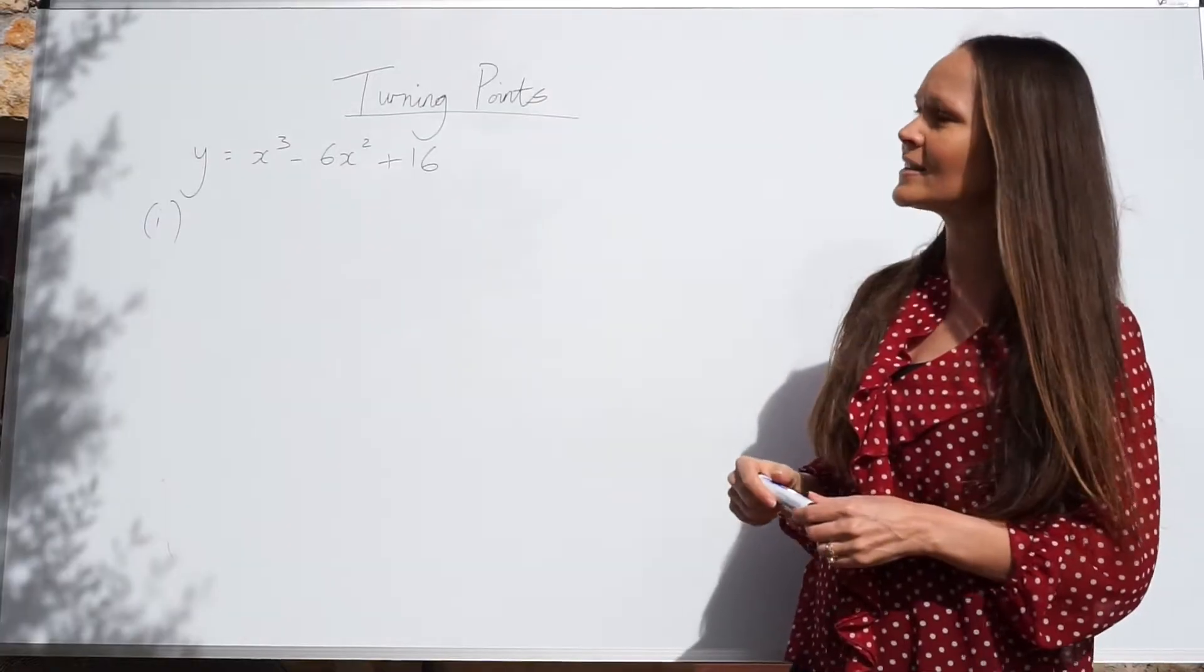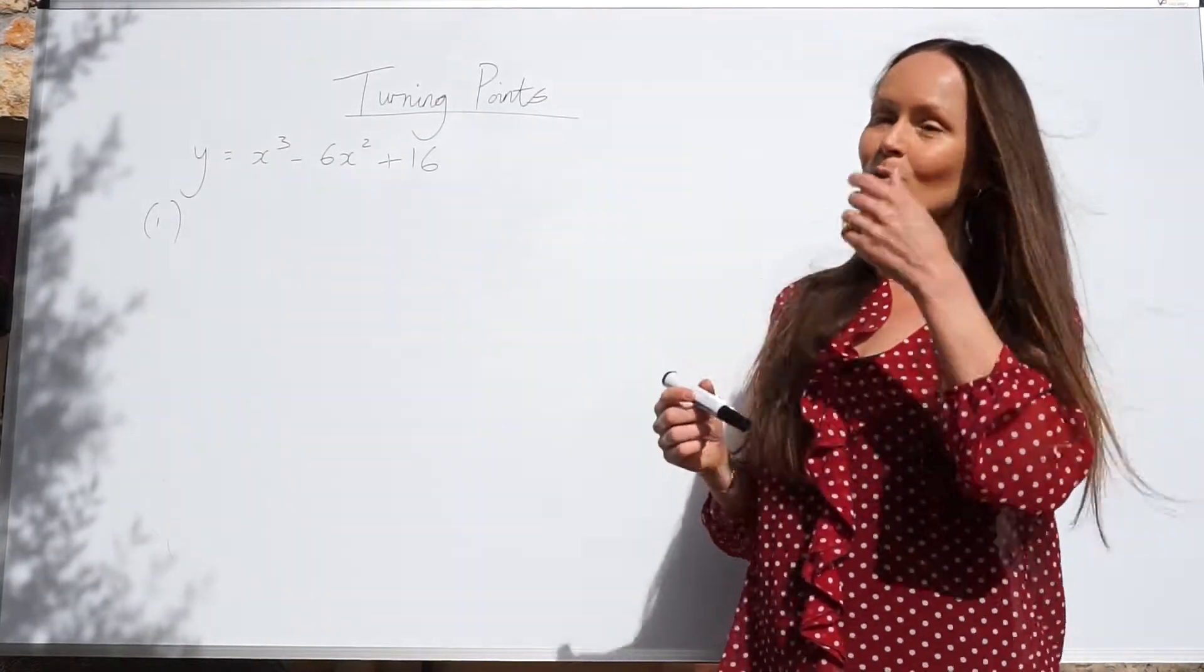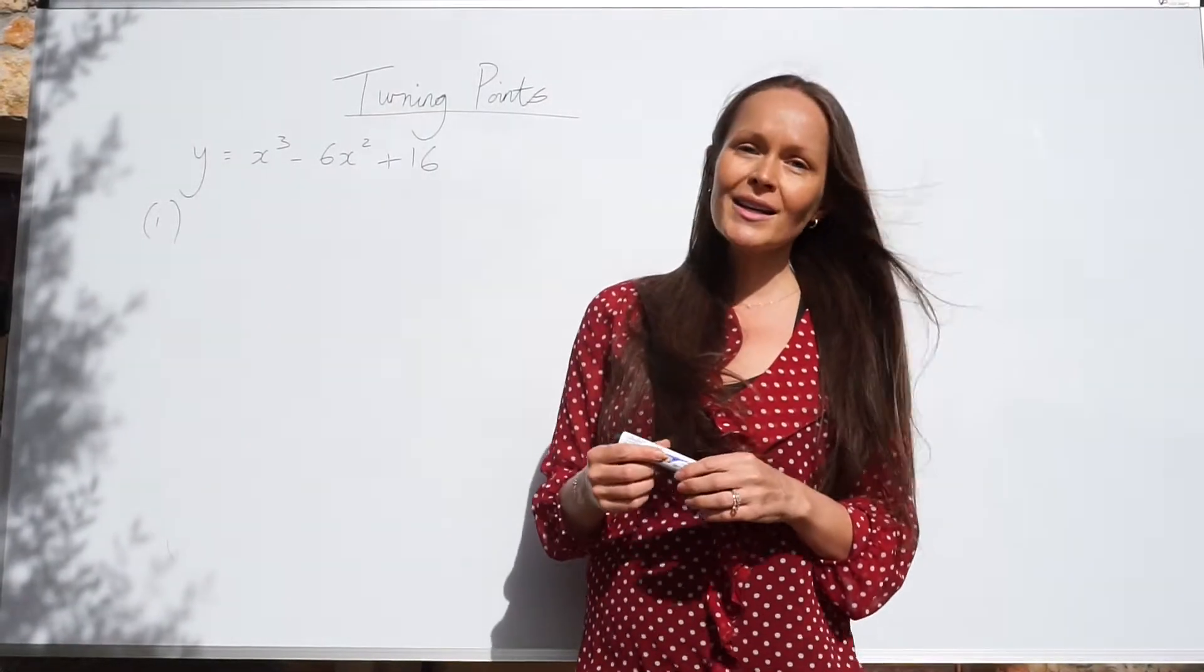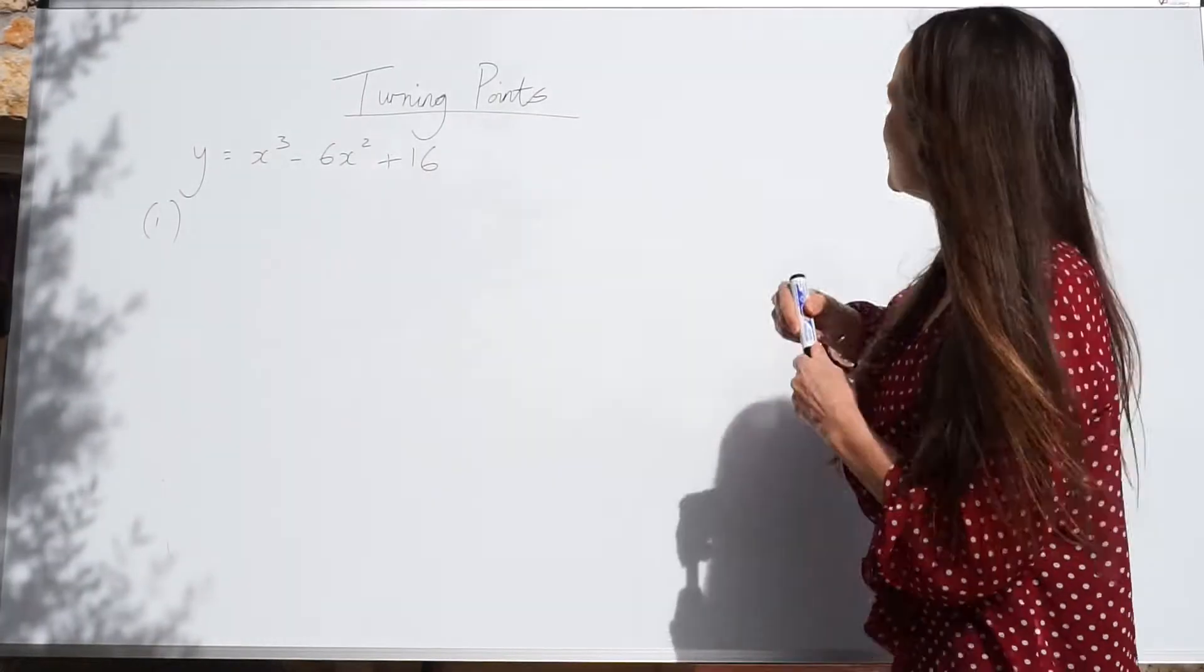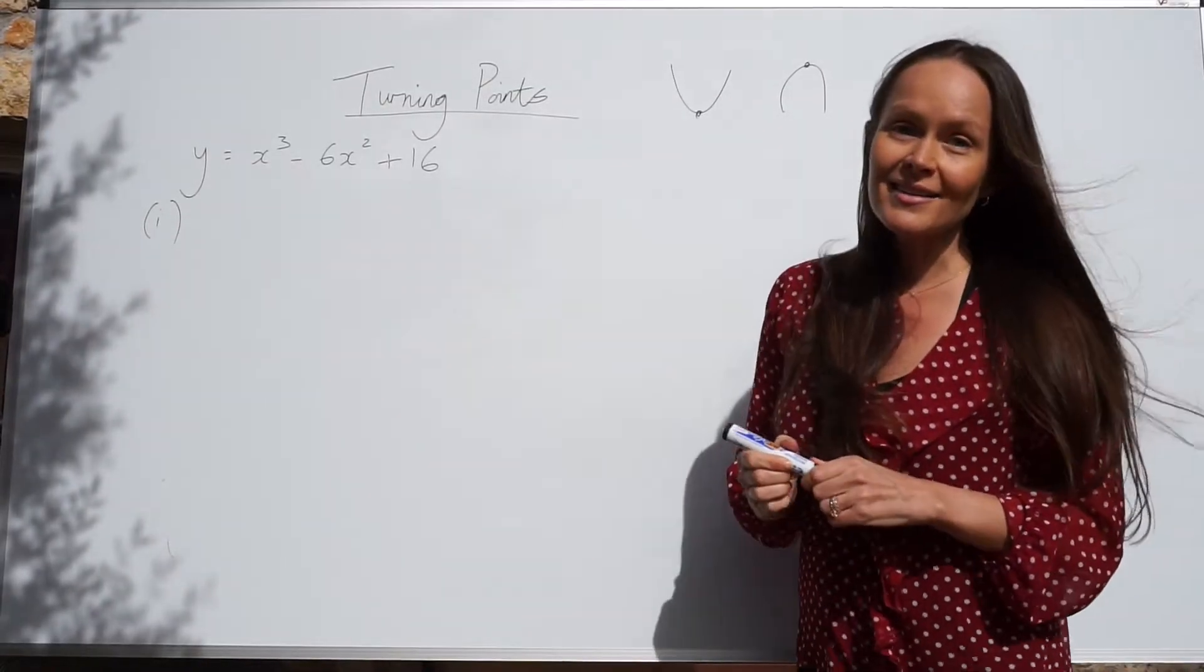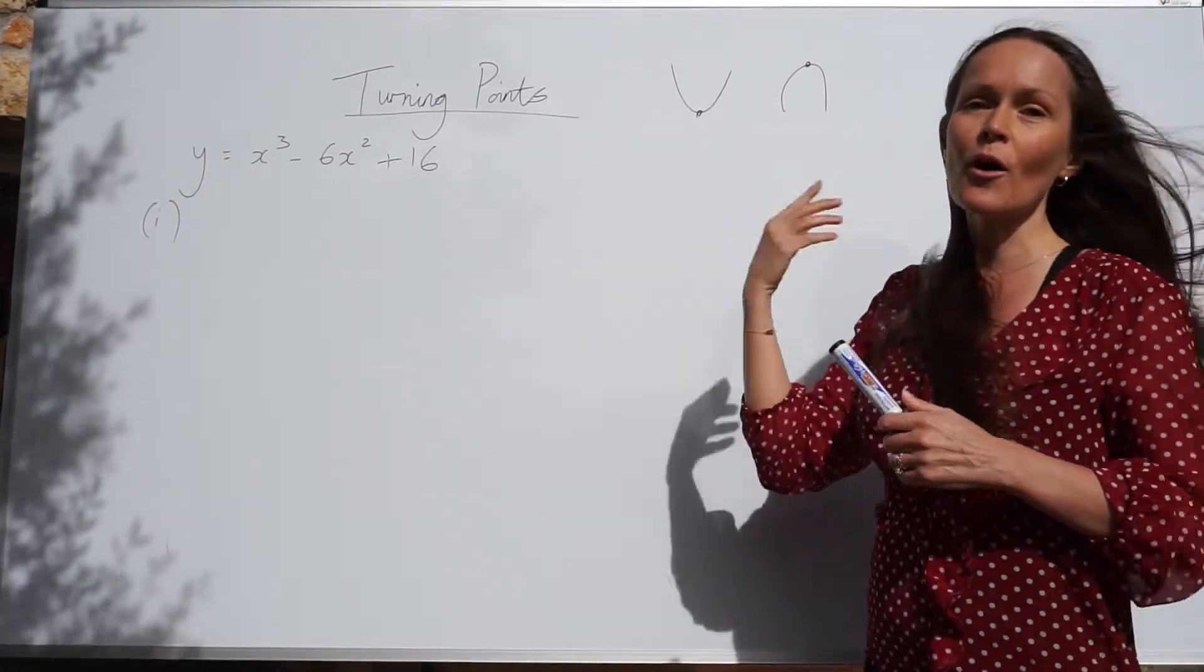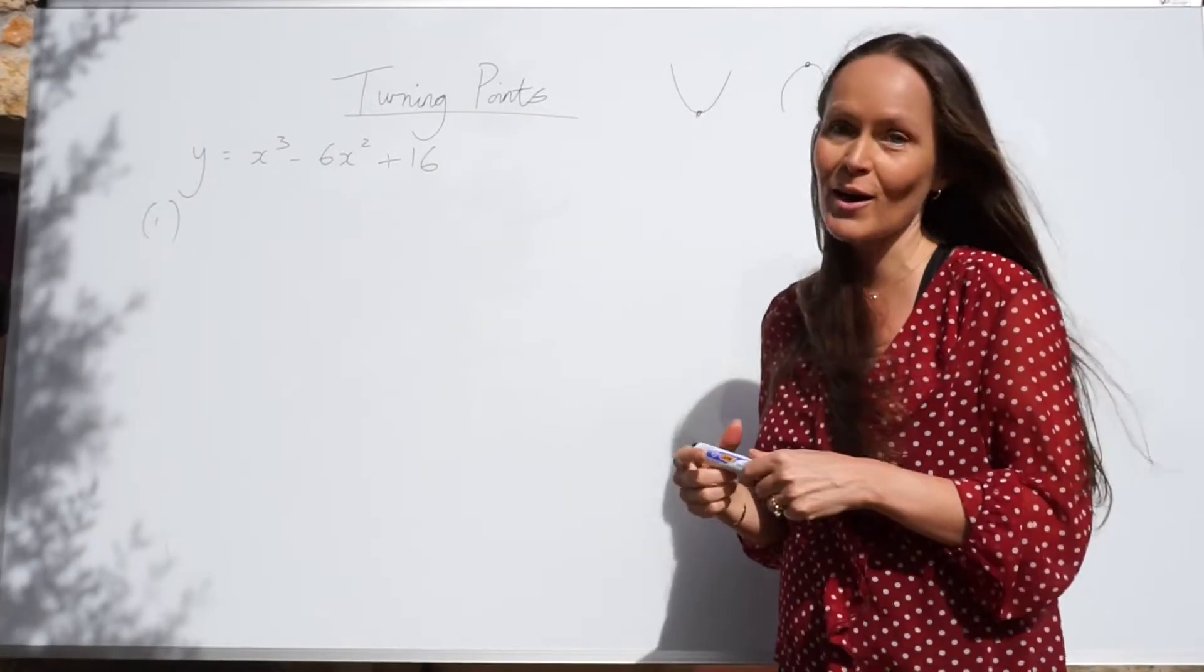So, when you find a turning point, what you need to do is differentiate. Because when you differentiate, or find dy/dx of a curve, you're working out the expression for the gradient of a curve. And when you have a minimum point or a maximum point, the gradient is always zero at those points.